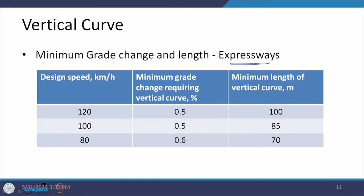For expressways, there are three design speed categories: 80, 100, and 120 km/h. The table defines the minimum grade change requiring a vertical curve. As soon as the grade change reaches 0.5 percent or 0.6 percent at 80 km/h design speed, a curve must be provided. If no curve is otherwise required, there is still a minimum vertical curve length — ranging from 70 meters to 100 meters for design speeds of 80 km/h and 120 km/h respectively.